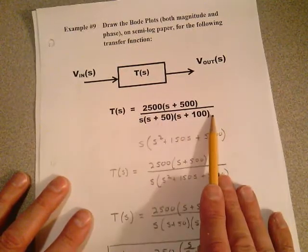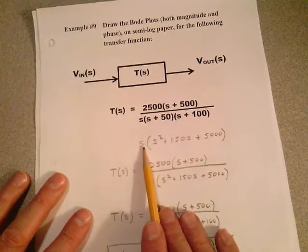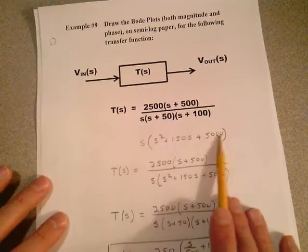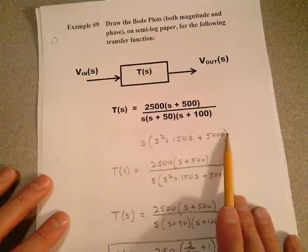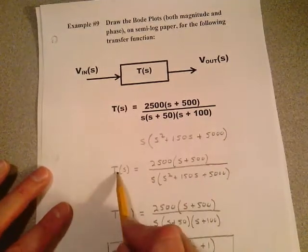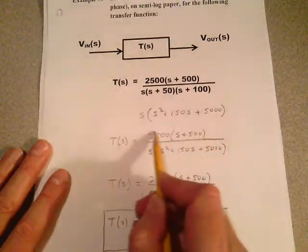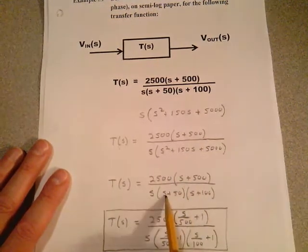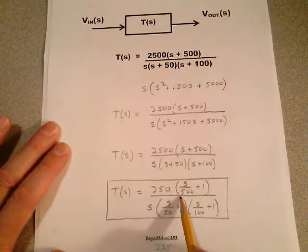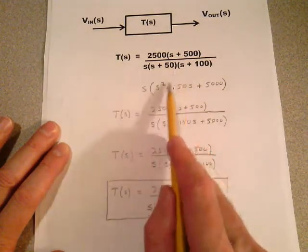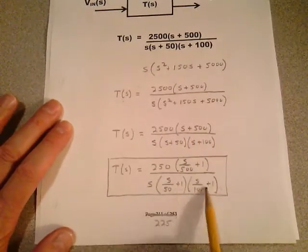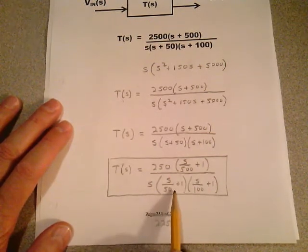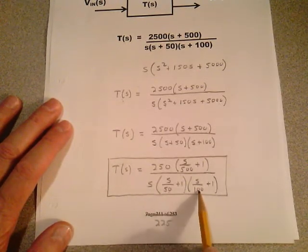The denominator started as S times the quantity S squared plus 150S plus 5000 — that's case four, the quadratic case. But if you can factor that quadratic down into two first-order terms, you can handle it as two separate breaks: a pole at 50 radians per second and a pole at 100 radians per second. If it's factorable, it just adds two poles instead of one. So a factored quadratic gives you two break frequencies.